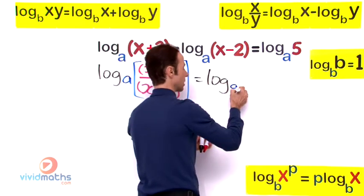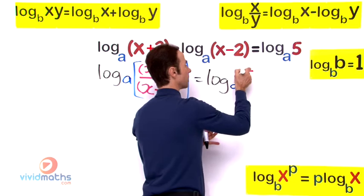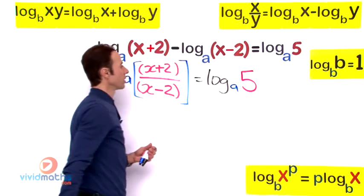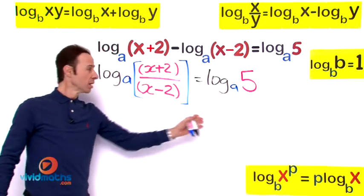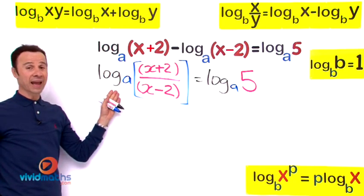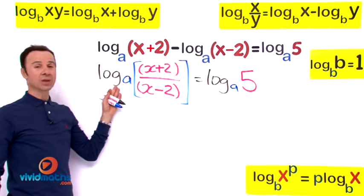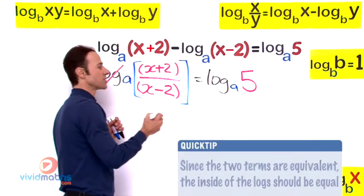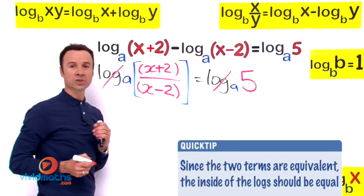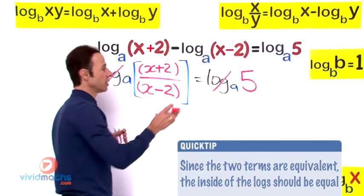Now this is kind of balanced because we have log base a here and log base a over here, so we can cancel these two guys so we can start to solve for x. Let's do that. Let's cancel log base a. What you do to one side, do to the other, and we're left with this guy over here equaling 5.